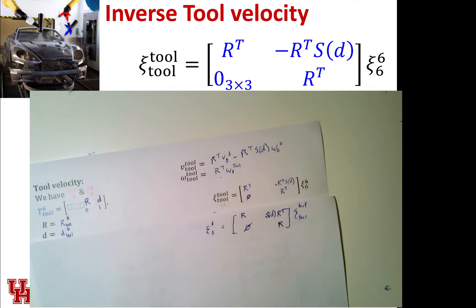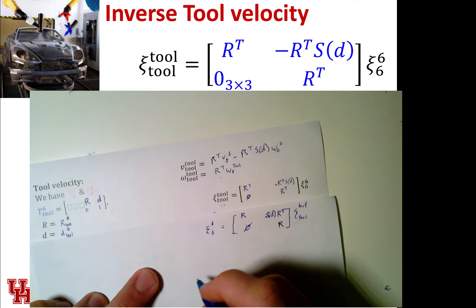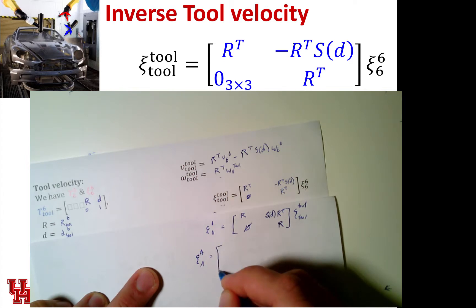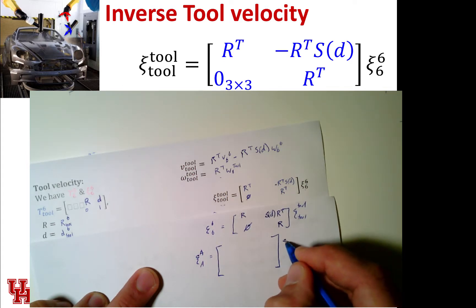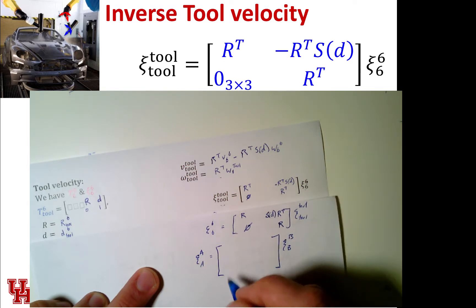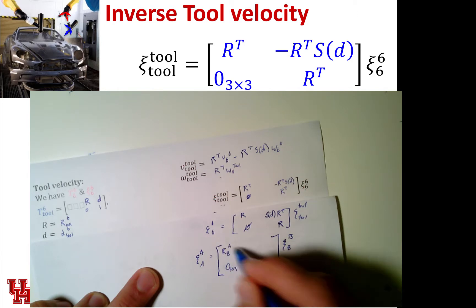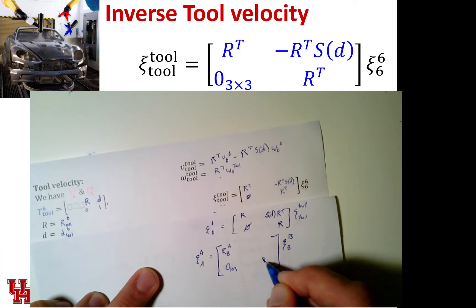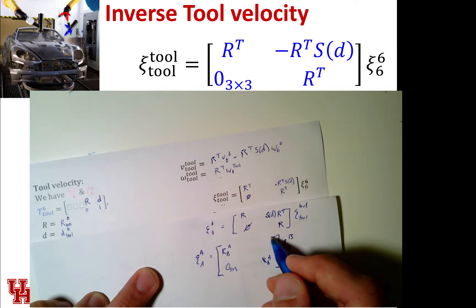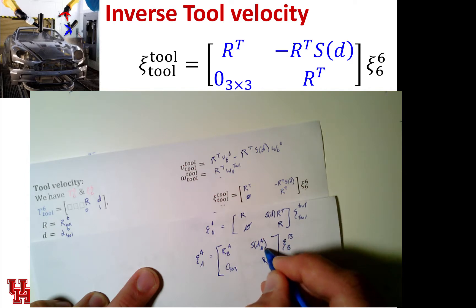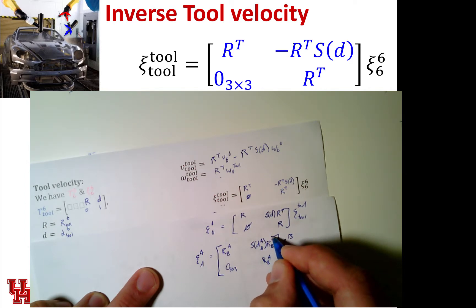So now we can transform between these rigidly attached moving frames. And so in general, if you have a psi A in frame A and you want to get from some psi B in frame B, you're going to have a zero that's 3 by 3 down here. You'll have R, B in frame A. And then we've got to account for the linear velocity. So this will be S of D of B in frame A times R of B in frame A.